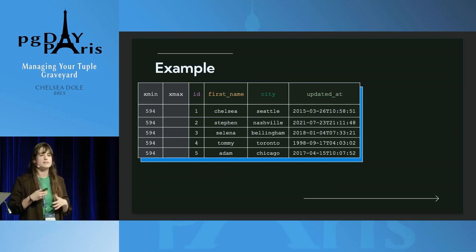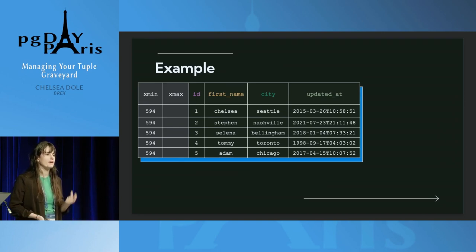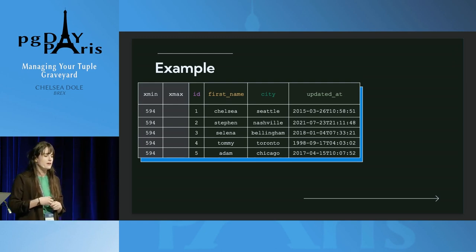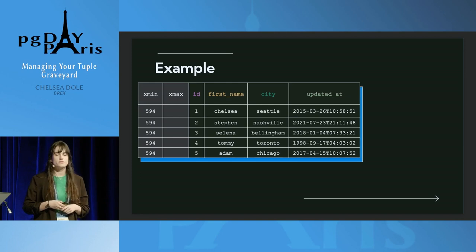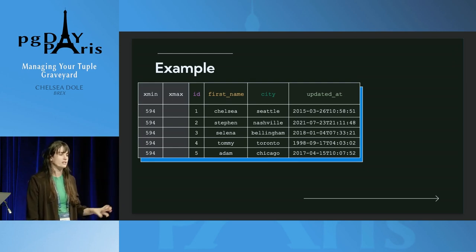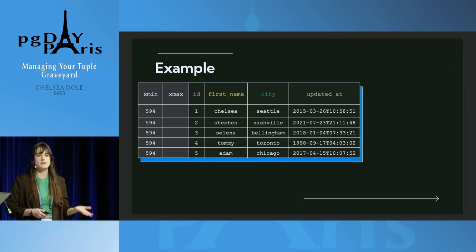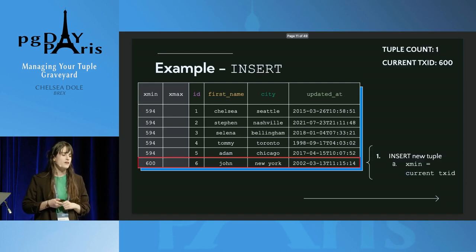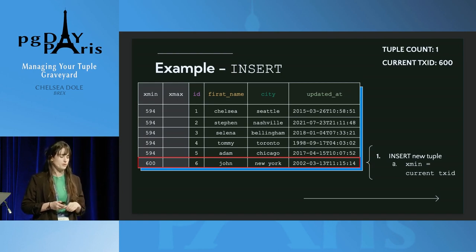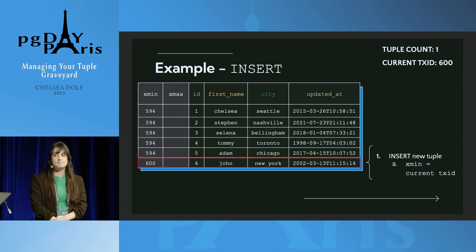Here we have an example table with ID, first name, city, and updated_at — maybe locations of employees at a company. In gray we have the two hidden columns that exist on every single table. Xmin shows the same transaction did a batch insert of all these rows at once, and Xmax is empty, so they have not yet been updated or deleted — they're all live.